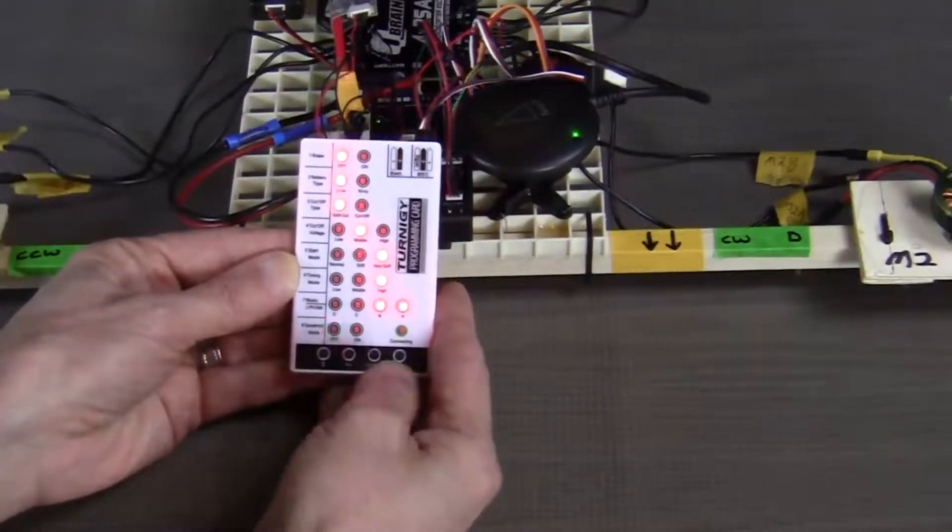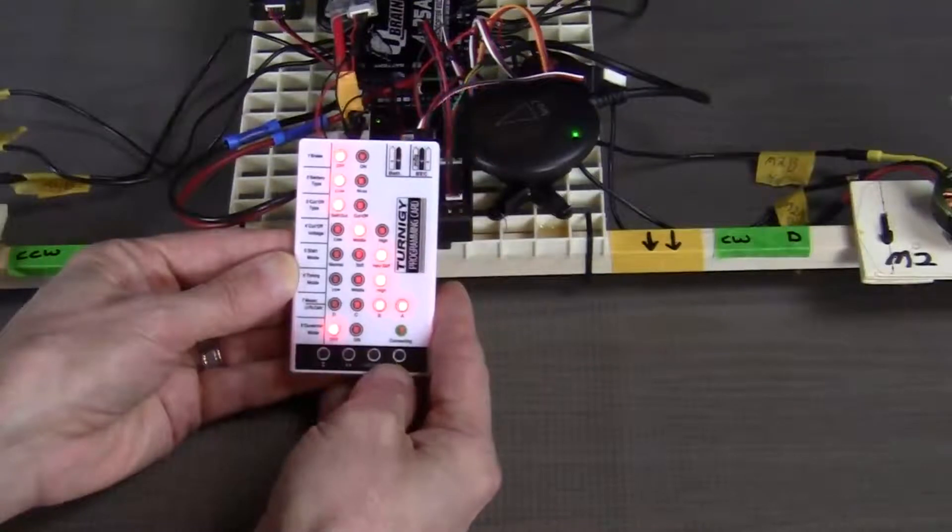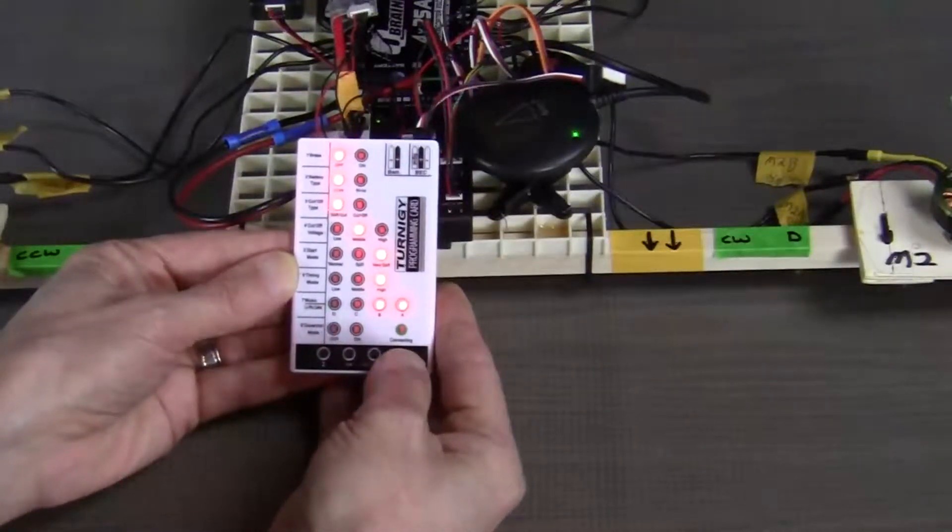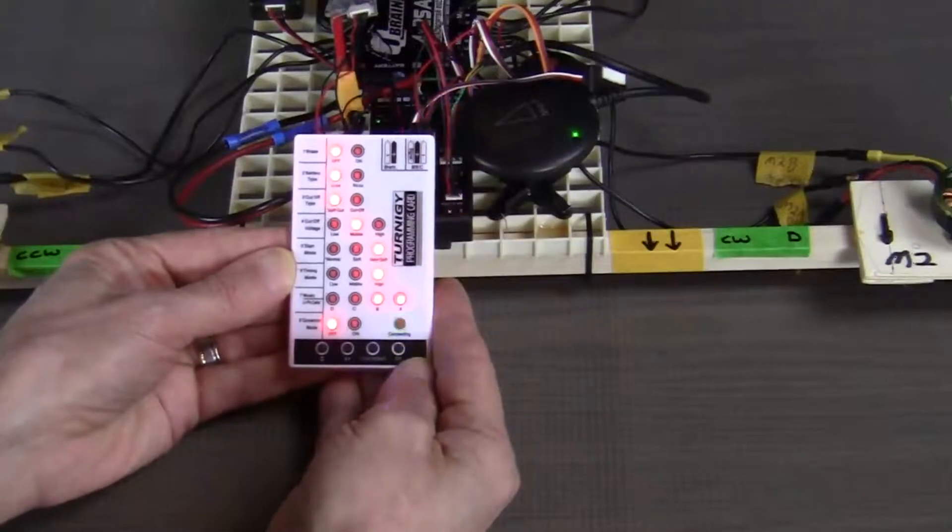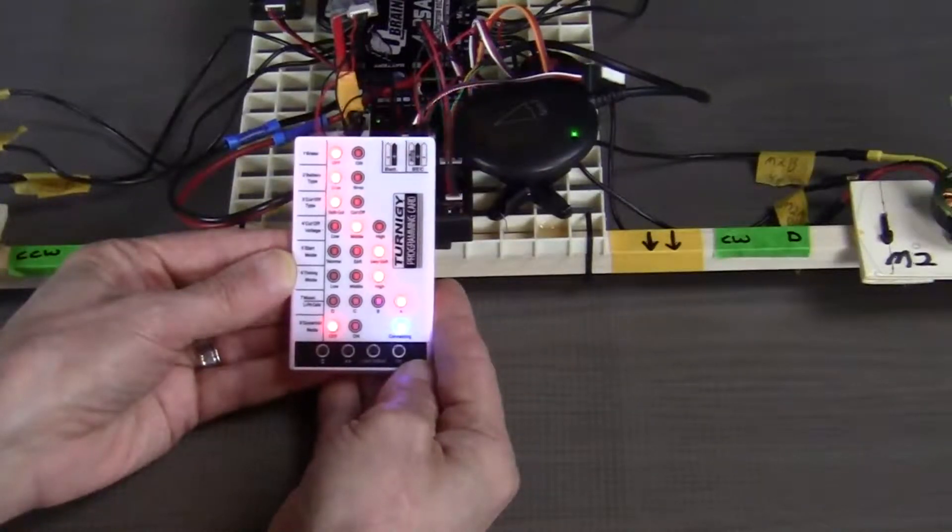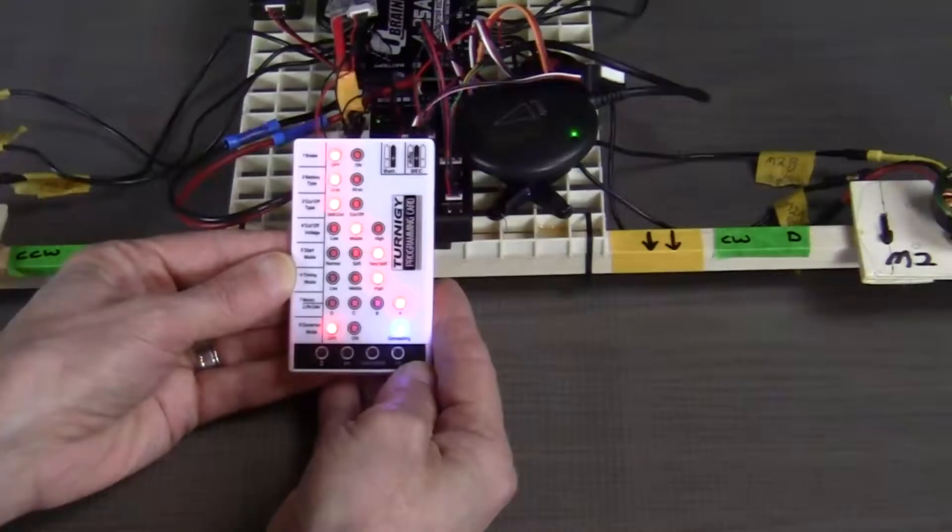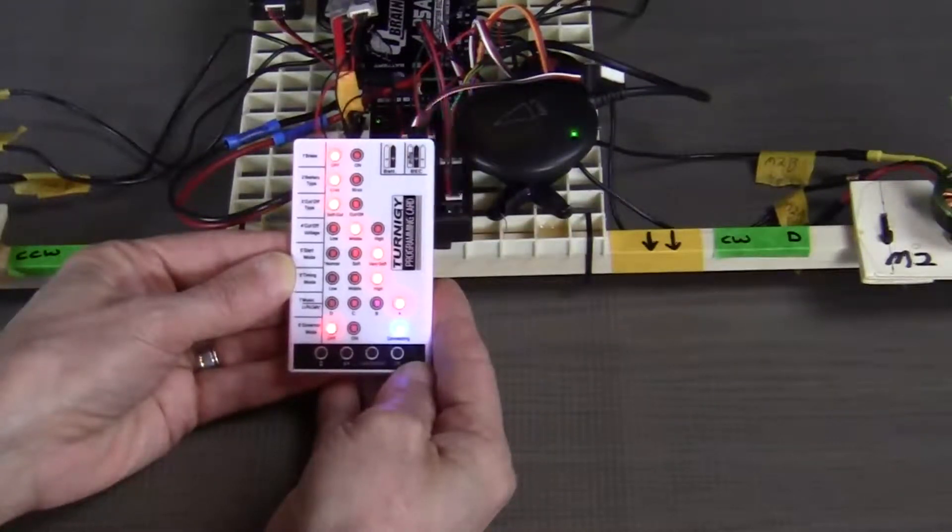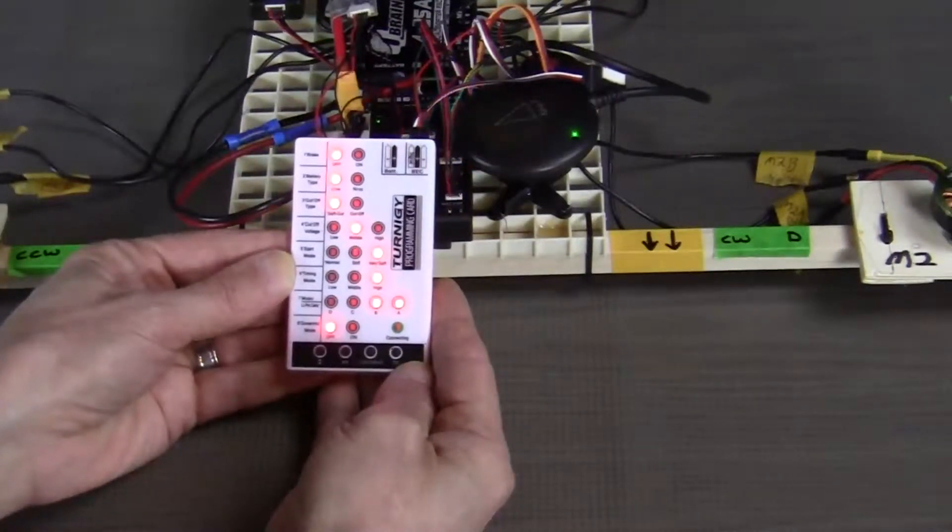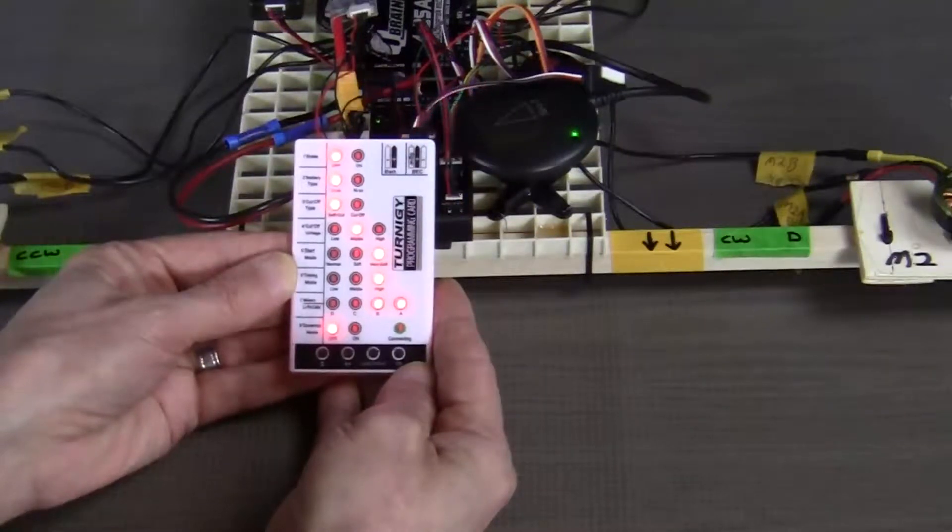Now that we've got our settings all set, we can go ahead and press the OK button. The blue LED will flash indicating that the new settings are being transferred to the ESC. When that's done, all that new information has now been transferred to the ESC. It's stored there and your ESC is now programmed.